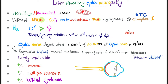Unfortunately, this is usually irreversible and we do not have a cure for hereditary mitochondrial diseases at this point. Some patients have tremors, others do not. Some have multiple sclerosis, others do not. Some have Wolf-Parkinson-White pre-excitation syndrome of the heart, others do not.